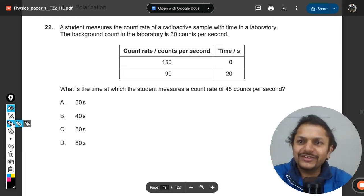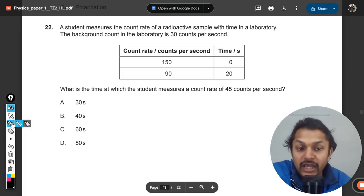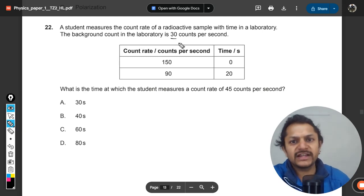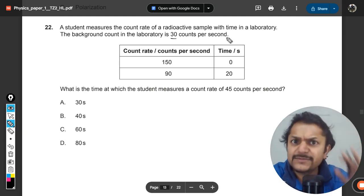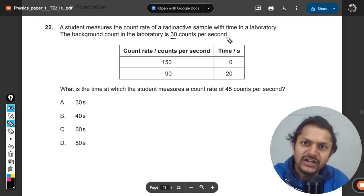A student measures the count rate of a radioactive sample with time in a laboratory. The background count is 30 counts per second. Whether the reaction is taking place or not, the device is showing 30 counts, so all values have been added with 30.